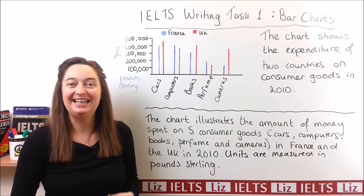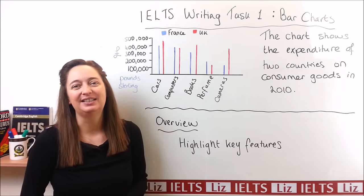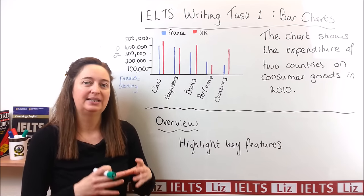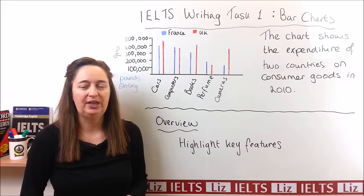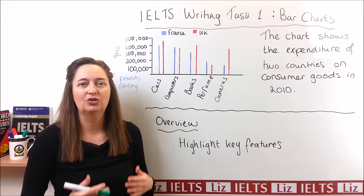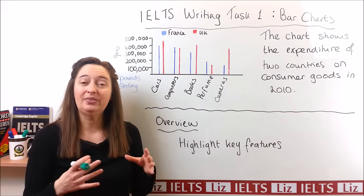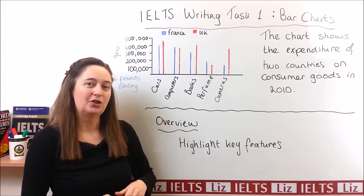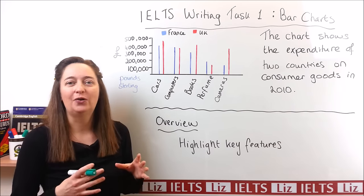Now let's move on and have a look at the overview. The overview is the most important paragraph in your IELTS Writing Task 1. This is the paragraph where you will collect all the key features and put them together in an overview statement. The examiner is looking for the overview. If you have no overview, you will not get above band score five for task achievement — that's 25% of your marks. If you have an overview, that's band score six. If you have a clear overview, that's band score seven. So your band score will go up depending on this overview.